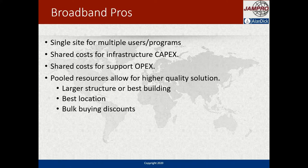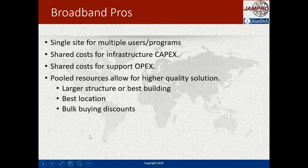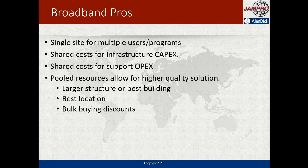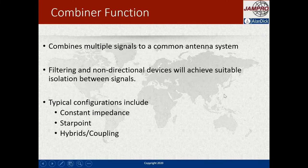Operational costs are also shared on an ongoing basis because you've got multiple people sharing. Overall, as you combine more and more channels, the cost reduces to each user. You can also afford a higher quality system that gives a better engineering solution. It means you can pick the larger structure which generally gives the best coverage or the best location, and if you're buying a large system you can get discounts as well.